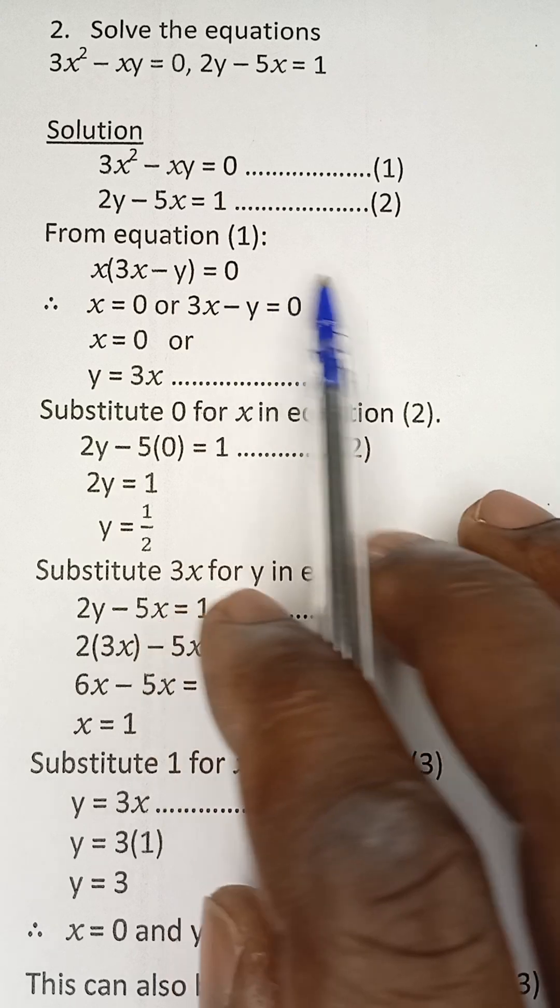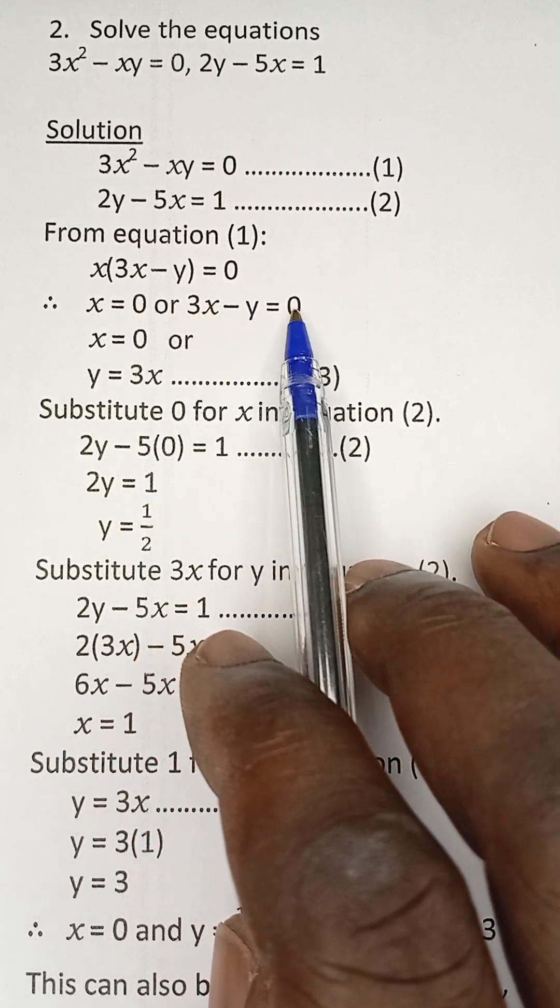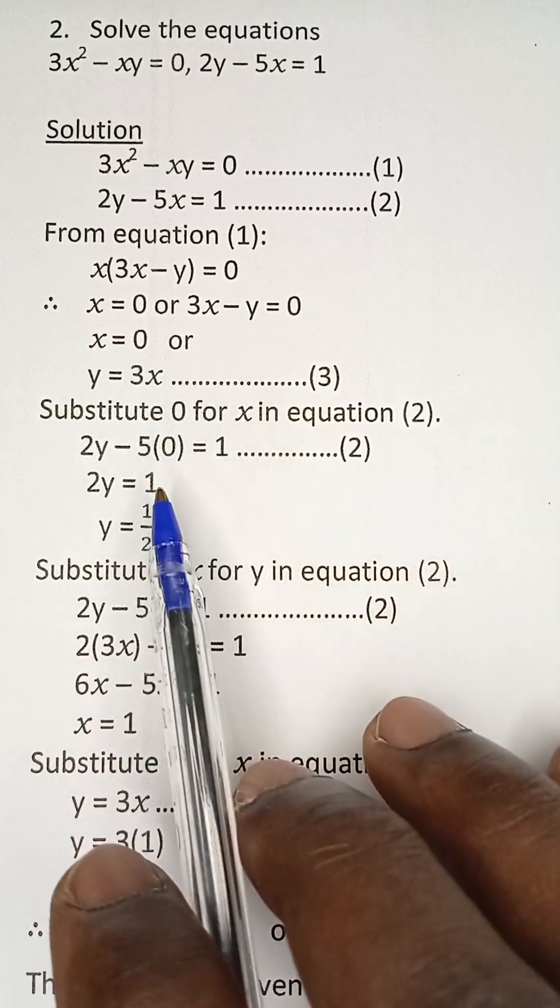If we take y to the other side, it becomes positive y. So y will be equal to 3x from this second part. Now, when we have these 2, we now have x = 0.